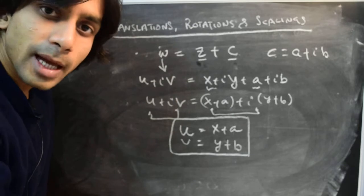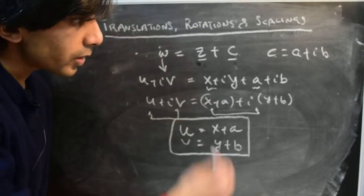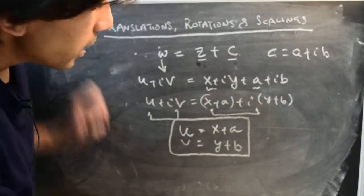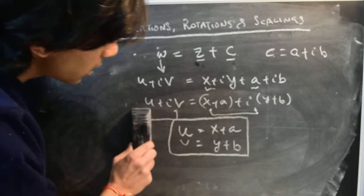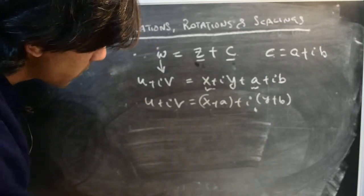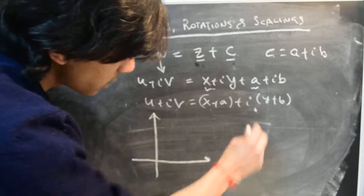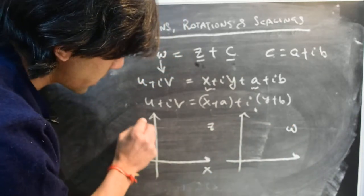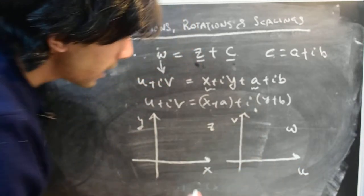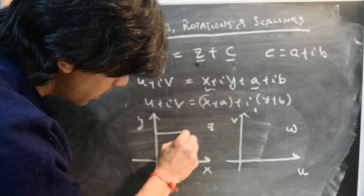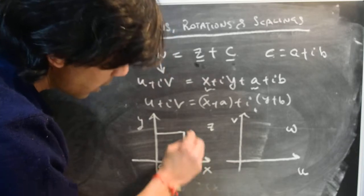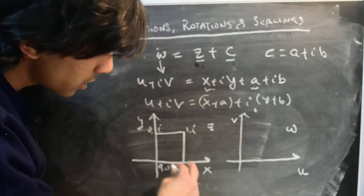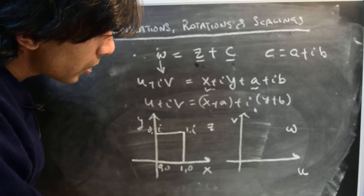Now let's see what effect this function has on a figure in the z-plane and how it maps into the w-plane. Let's draw the z-plane and the w-plane side by side, labeling the axes x and y for the z-plane and u and v for the w-plane. Consider a simple figure: a unit square in the z-plane going from the origin (0,0) to (1,0) to (1,i) to (0,i).